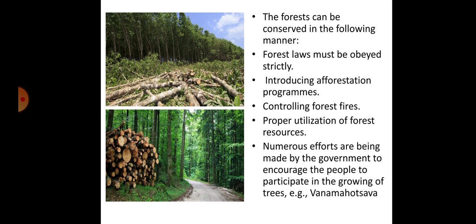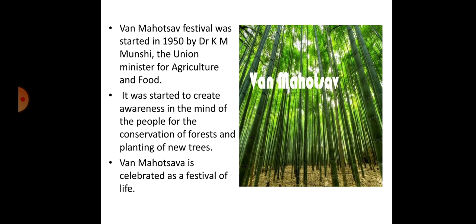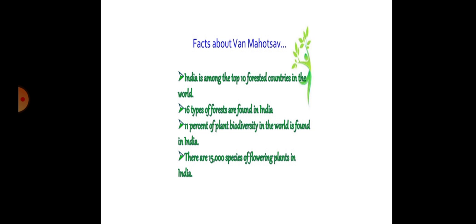One example is Van Mahotsav. Van Mahotsav festival was started in 1950 by Dr. K. Munchi, the Union Minister for Agriculture and Food. It was started to create awareness in the minds of people for the conservation of forests and planting of new trees. Van Mahotsav is celebrated as a festival of life.